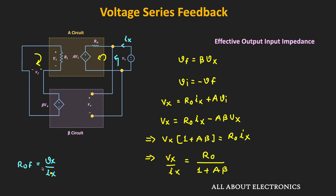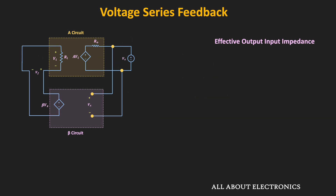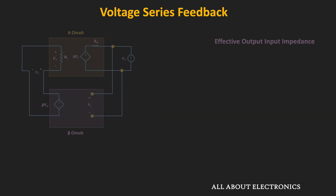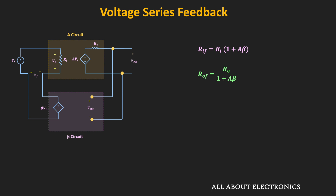From the equation, Vx·(1 + Aβ) = R0·Ix, so Vx/Ix = R0/(1 + Aβ). This means with feedback, the effective output impedance reduces by the factor of (1 + Aβ). This happens because we have the shunt connection on the output side — shunt connection reduces the output impedance. So in the voltage series feedback, the output impedance reduces and the input impedance increases by the same factor.